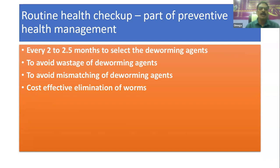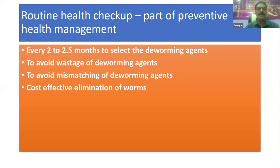For routine health checkups every 2 to 2.5 months, we select appropriate deworming agents to avoid wastage, mismatching of agents, and achieve cost-effective elimination of worms. For example, many farmers give only ivermectin, but if sheep and goats are still showing submandibular edema, fecal examination may reveal the presence of fasciola or amphistomes, meaning the previously given dewormer was wasted. Therefore we should perform fecal sample examination first to find out the different types of worms present in the flock and then choose the specific deworming agent.